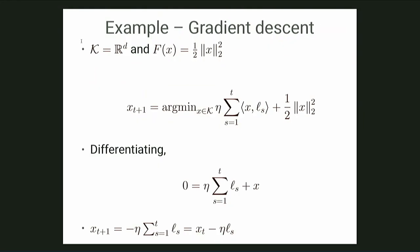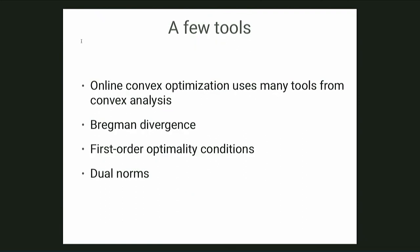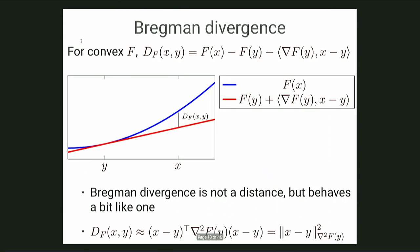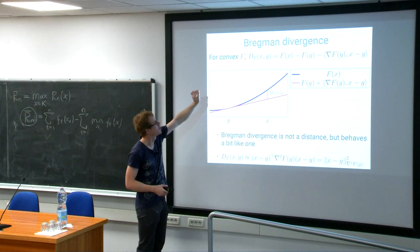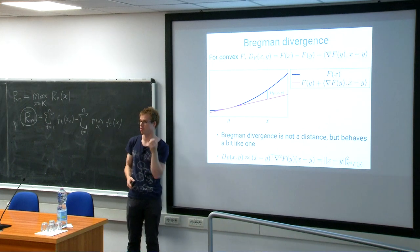To analyze FTRL we need tools from convex analysis. We'll learn about Bregman divergences — even if you think you know them, it's your punishment to hear it again. The Bregman divergence measures the gap between a convex function and its tangent: it measures how large the loss is when you use the linearization inequality.